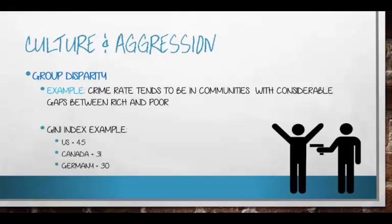Looking at a broader cultural context, we can explain why some people are more aggressive by looking at societal issues. When we compare the wealthiest to the poorest within countries and measure how large the gap is — called the Gini index — countries with a higher Gini index show more violent crime, while countries with a lower Gini index show lower violent crime. It's a correlation, but it's something to consider.